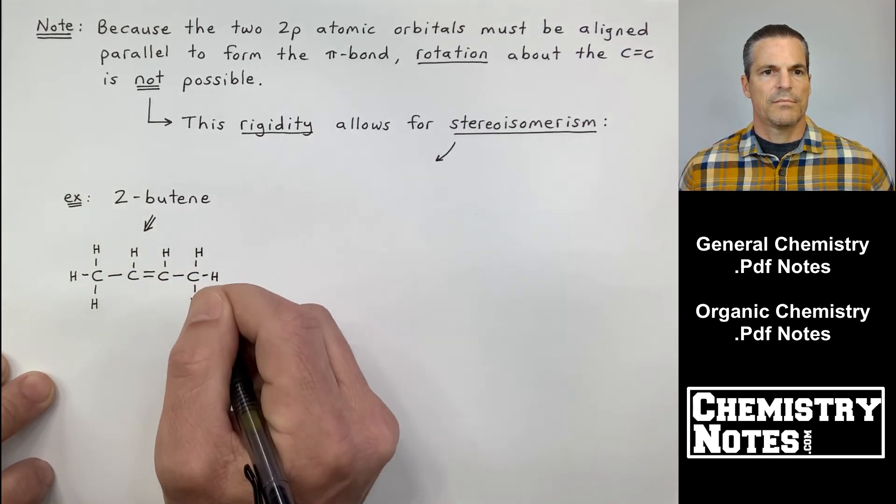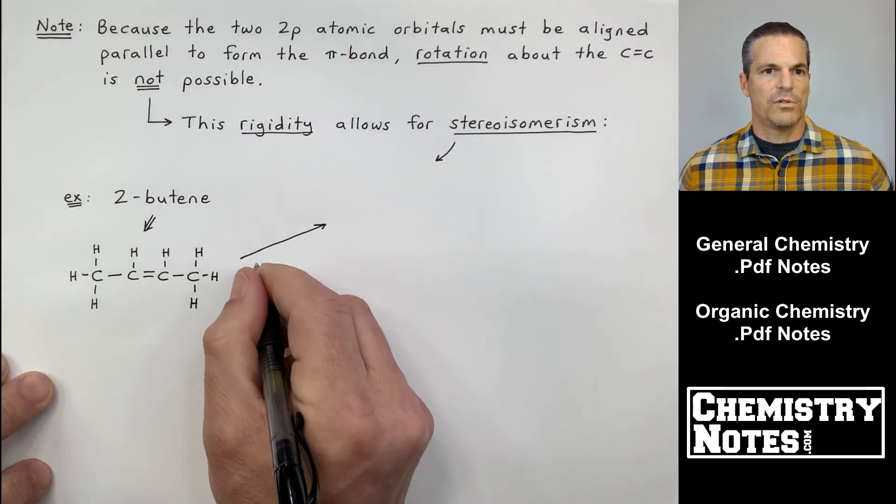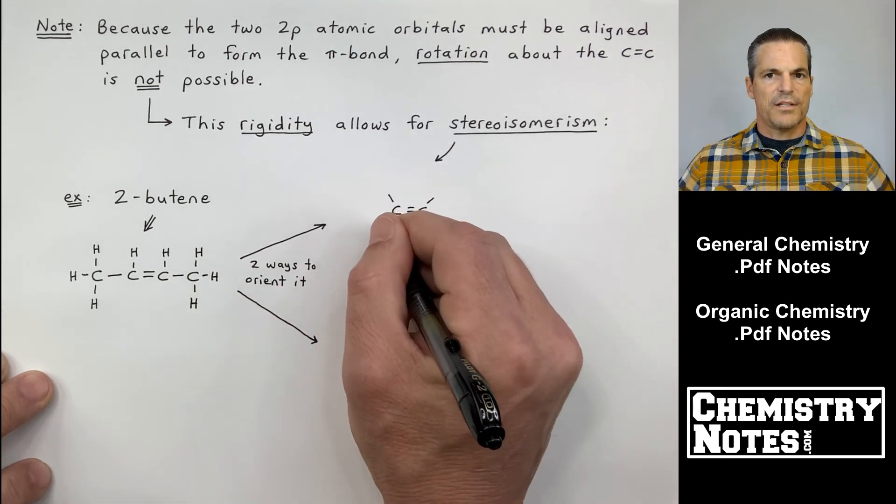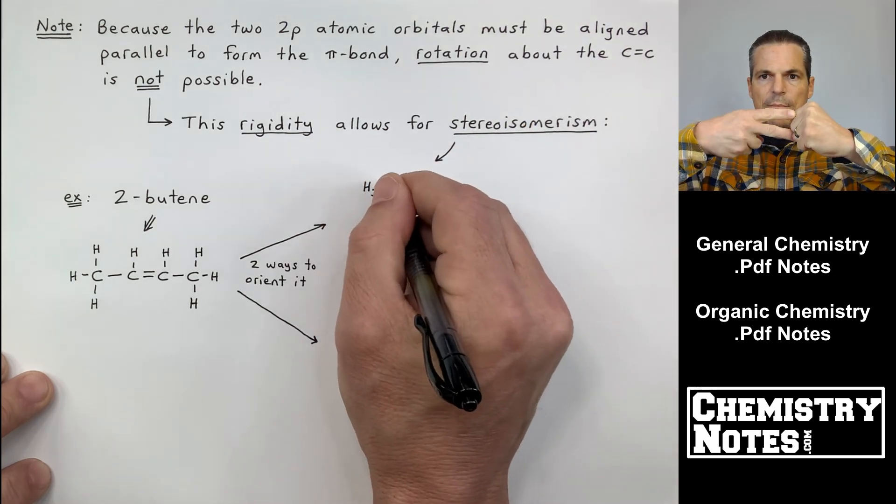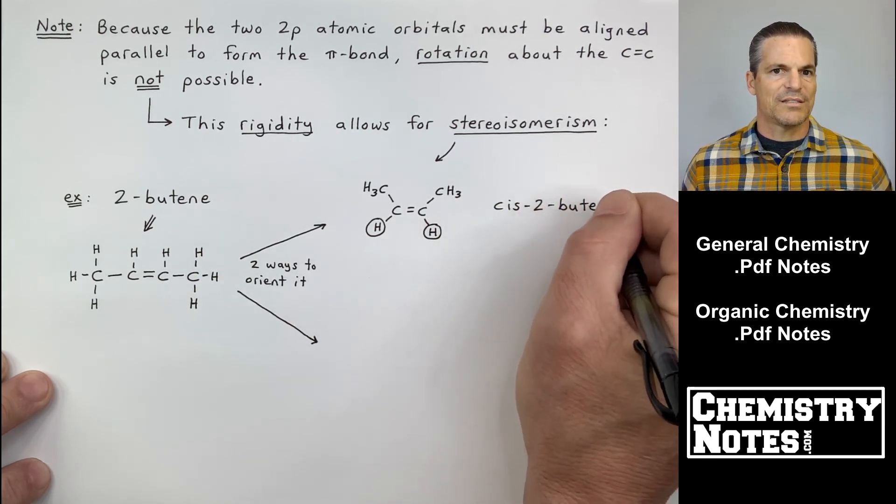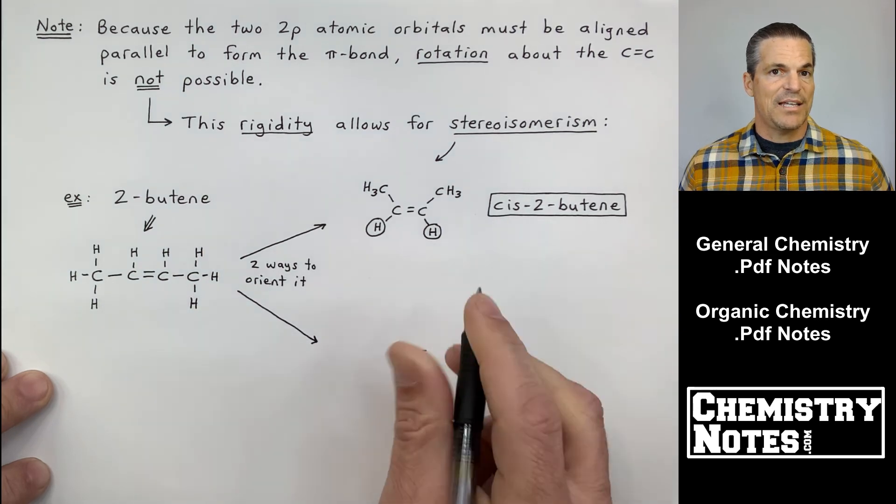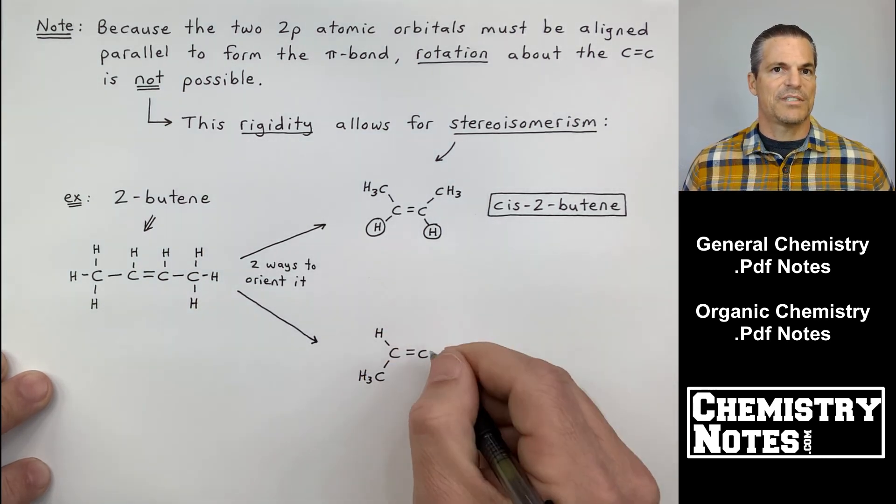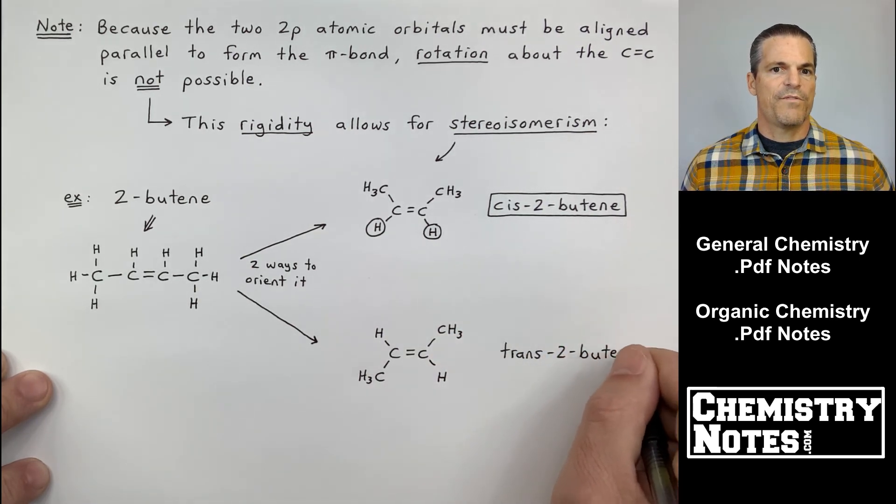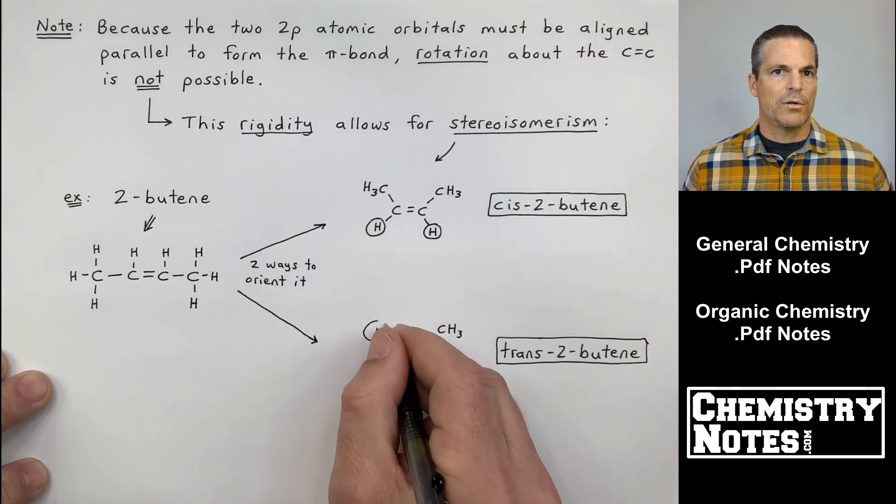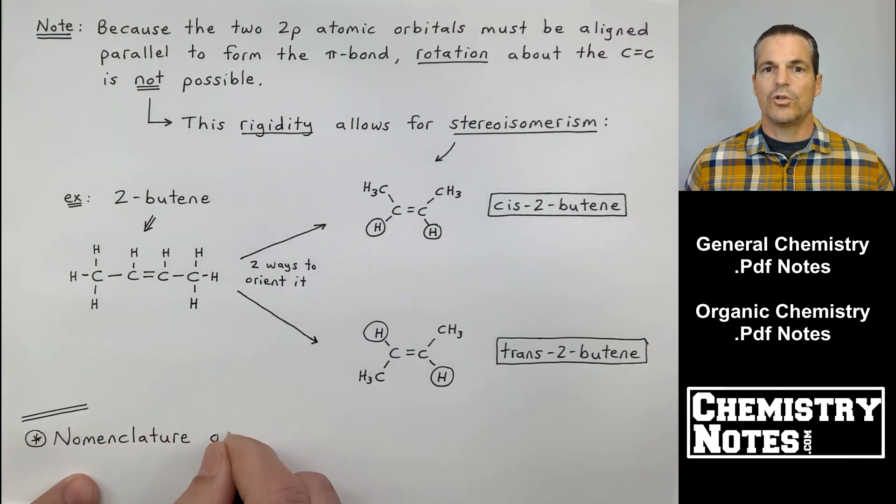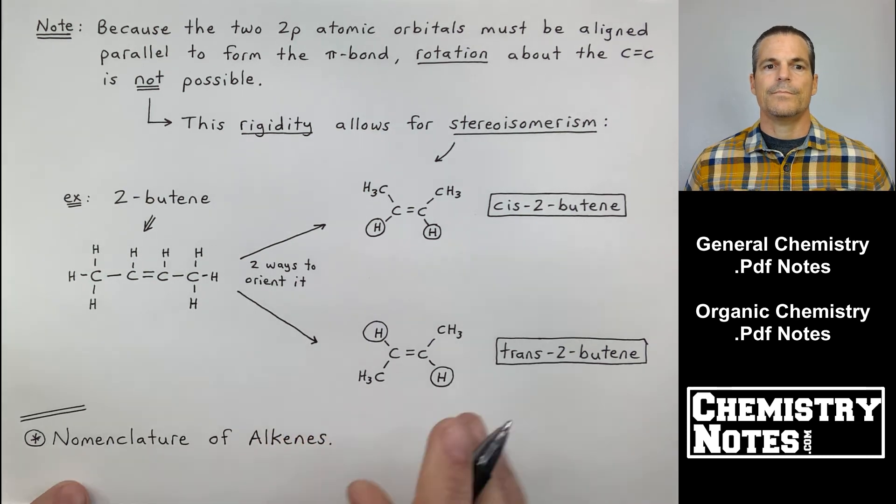So look at 2-butene right here. I'm drawing 2-butene. So 2 means the double bond is off of carbon 2. When I say off of carbon 2, I mean between carbon 2 and 3. Now, remember, this is rigid. I'm not able to freely rotate between that double bond right there. So it's stuck. And when it's stuck, there's two ways to orient this. I can have the H's kind of on the same side, cis. Cis is same side. Or I can have the two hydrogens be trans. Remember, when we first learned about this stuff, I referred to transcontinental railroad as across the United States. Here, the two H's are across the double bond from each other. Cis-2-butene, trans-2-butene.